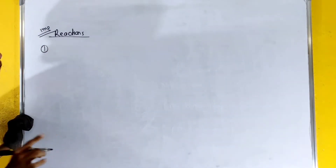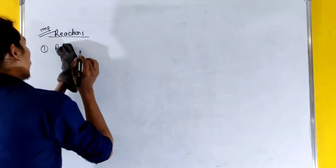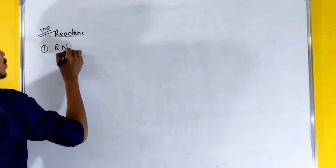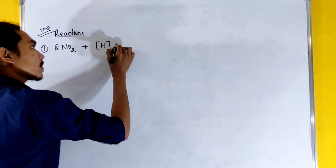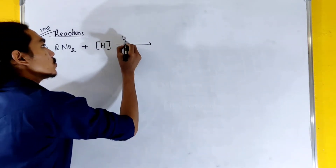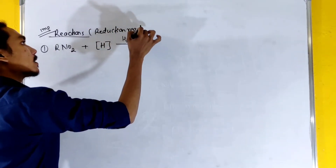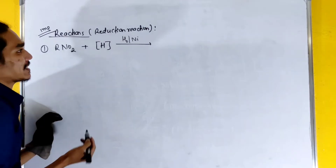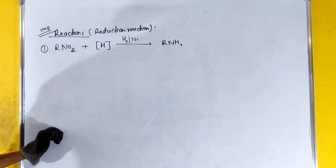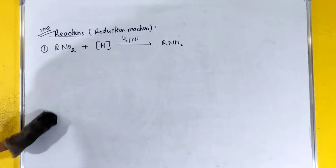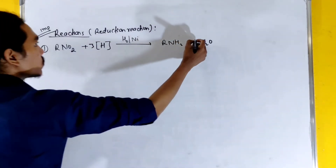Now for the important reactions. In reduction reactions, RNO2 plus hydrogen with Ni catalyst gives RNH2 — amine formation. The reaction involves 3 molecules of hydrogen and produces 2 molecules of water.